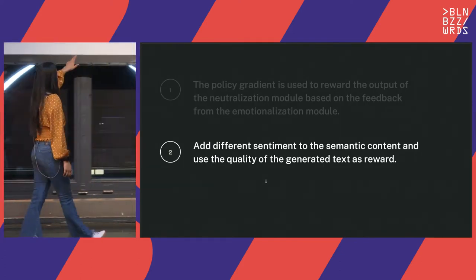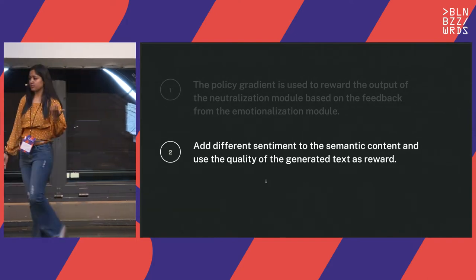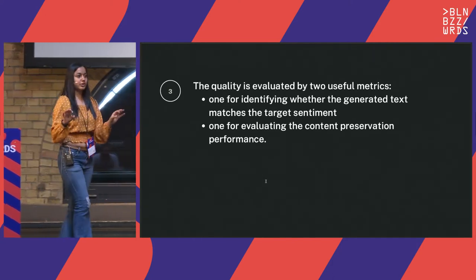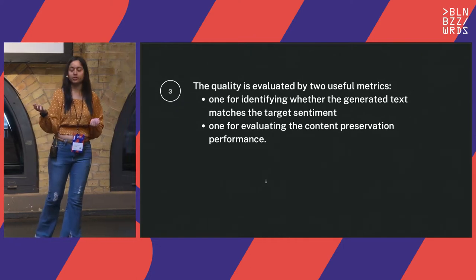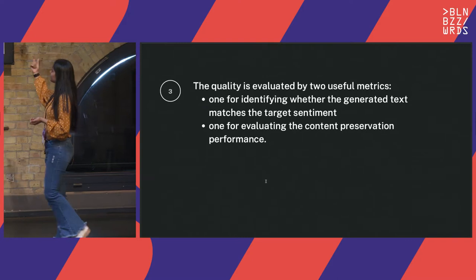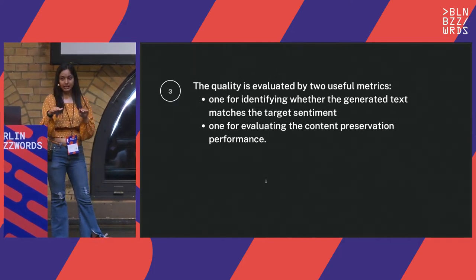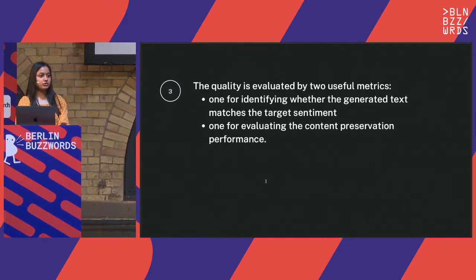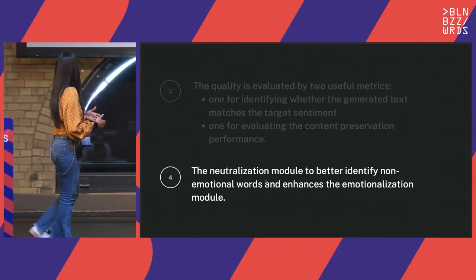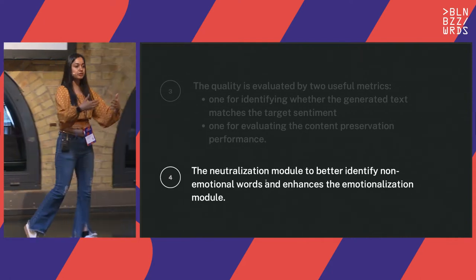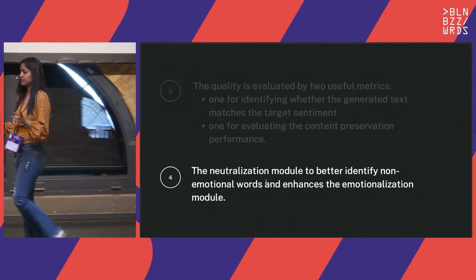Preserving the context while adding a different sentiment also depends on the quality of the generated text and the reward. To evaluate quality — for example, finding an equilibrium-based word for 'delicious' — one way is to check that it matches the targeted sentiment on the contrasting side at the same scale, and another is to verify that content preservation performance is retained. The neutralization module should identify non-emotional words, and the emotionalization module should generate better emotional or style words so that style transfers can be easily maintained.